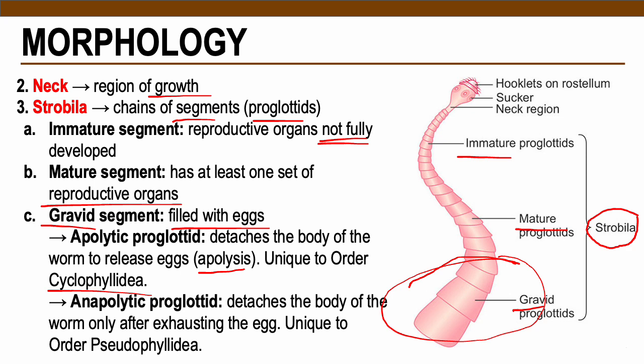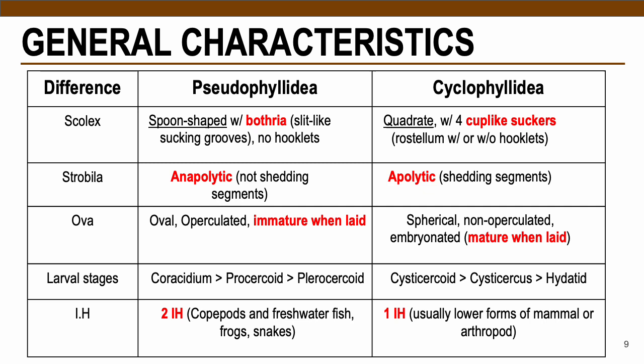The second is the anapolytic proglottide, the counterpart of apolytic: in this case, the eggs are released first, and then the gravid proglottide is detached. This is unique to your Pseudophyllideans; an example is D. latum.